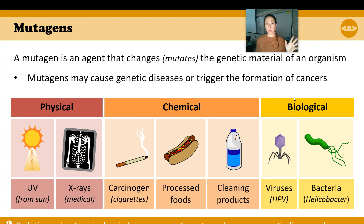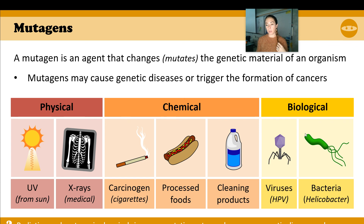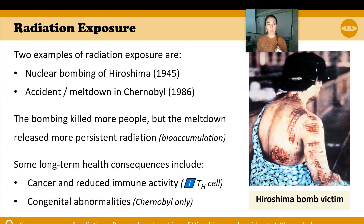Here's a reminder of the mutagens we talked about two lectures ago — they mutate DNA for various reasons. There are things from the environment and things from your genes. A reminder of all the different physical, chemical, and biological mutagens you covered in Topic 3.1 — things that can cause mutations: physical alteration, things we put into our body or environment, and biological agents like viruses and bacteria that can actually mutate DNA.